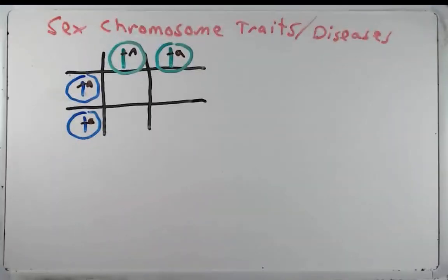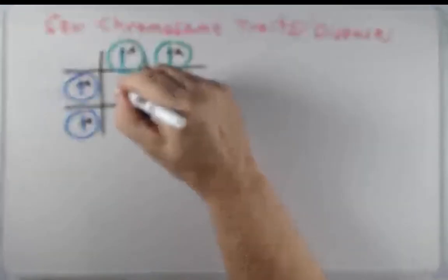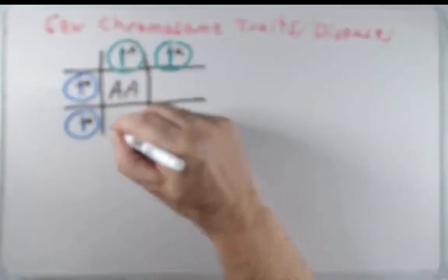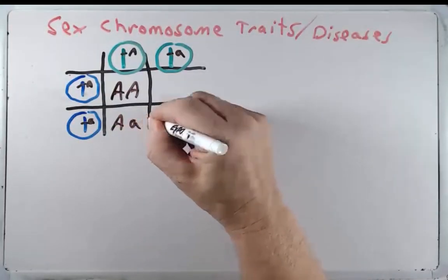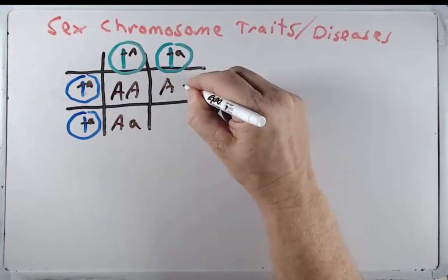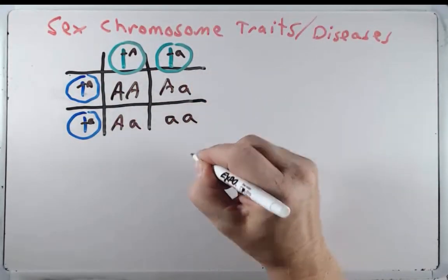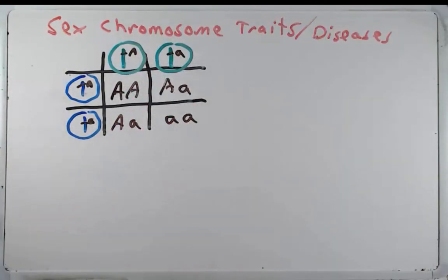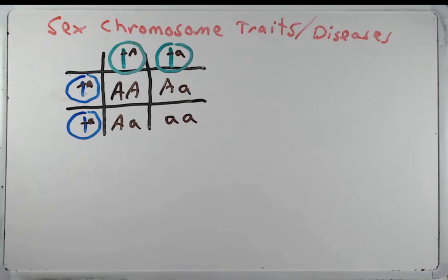When we do the cross we can see that we end up with progeny that are big A big A, big A little a, big A little a, or little a little a. This works because each parent has the same number of chromosomes — they have two of each one — so it makes this fairly straightforward.